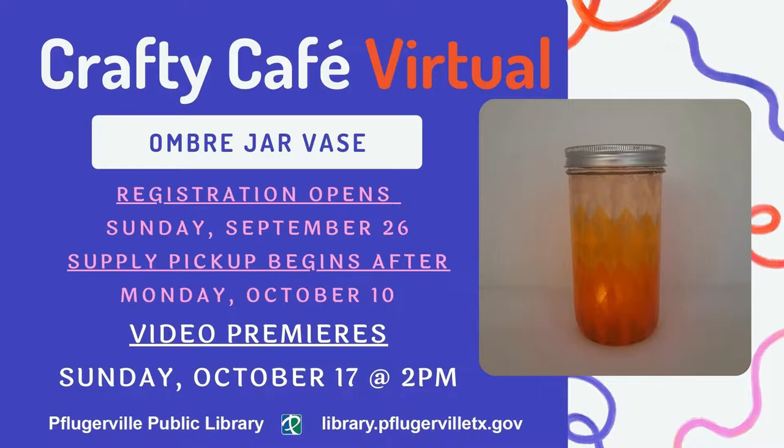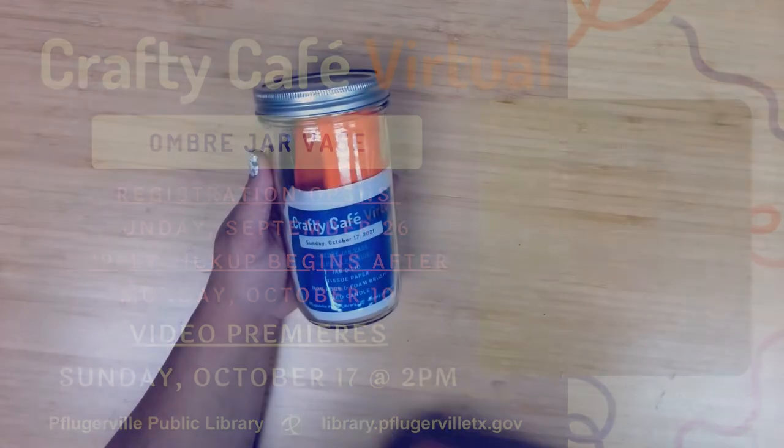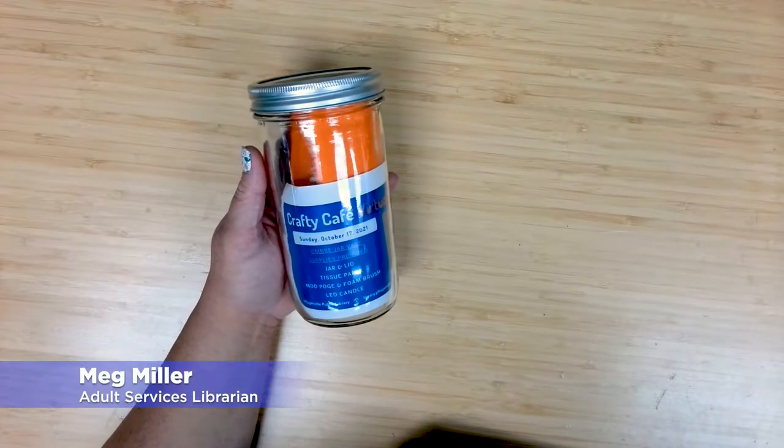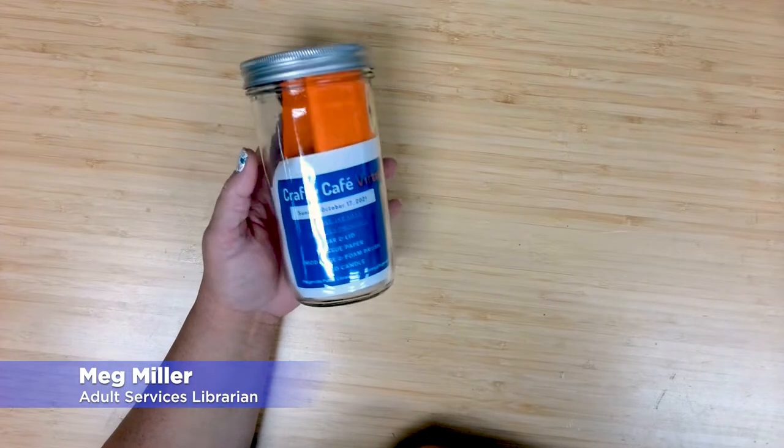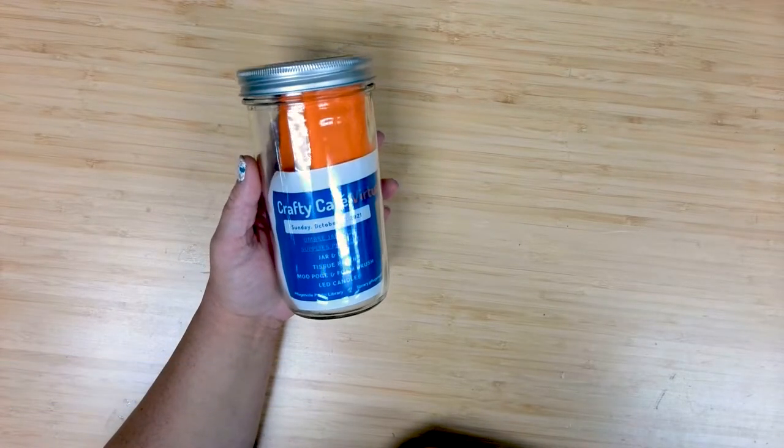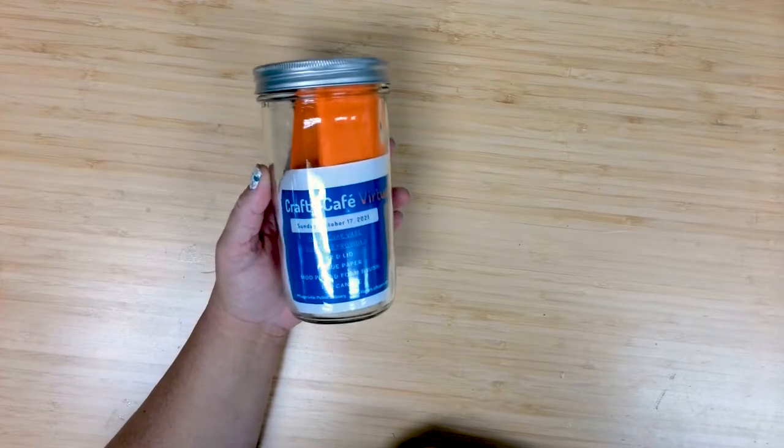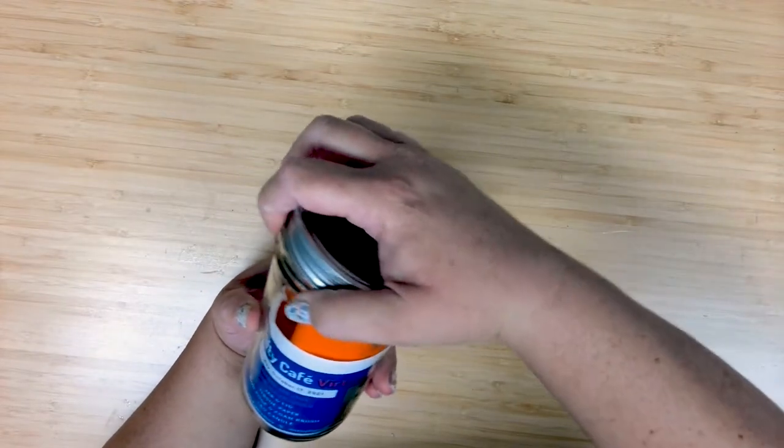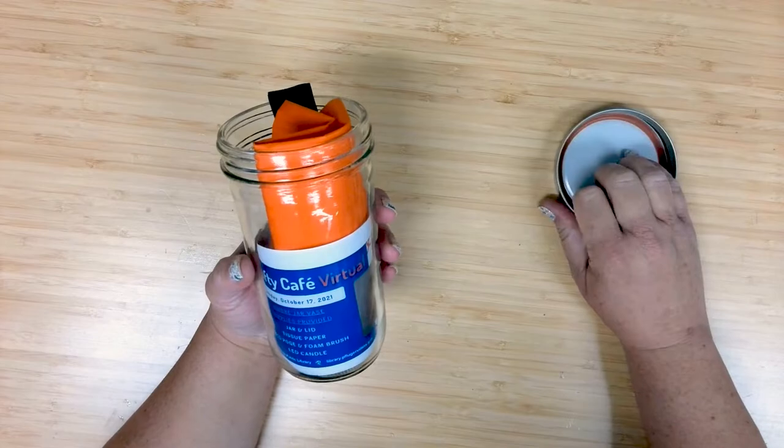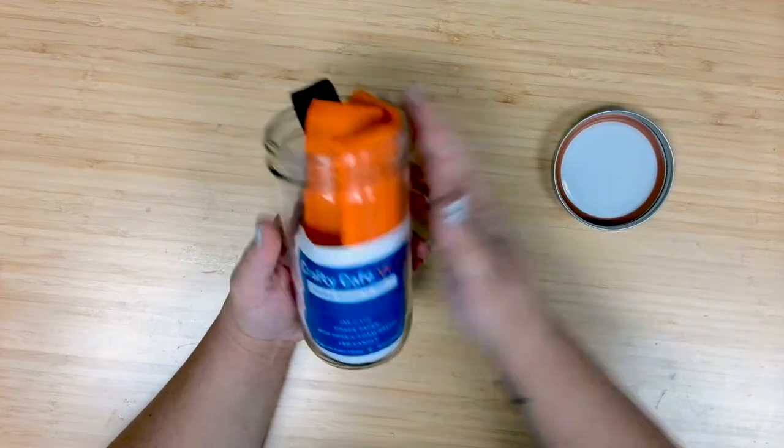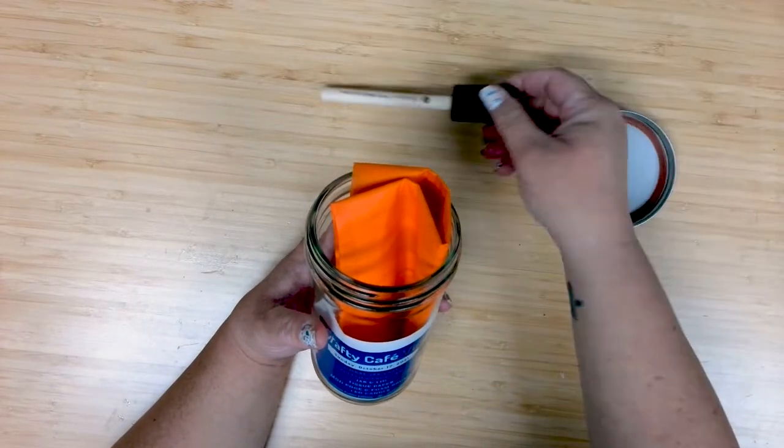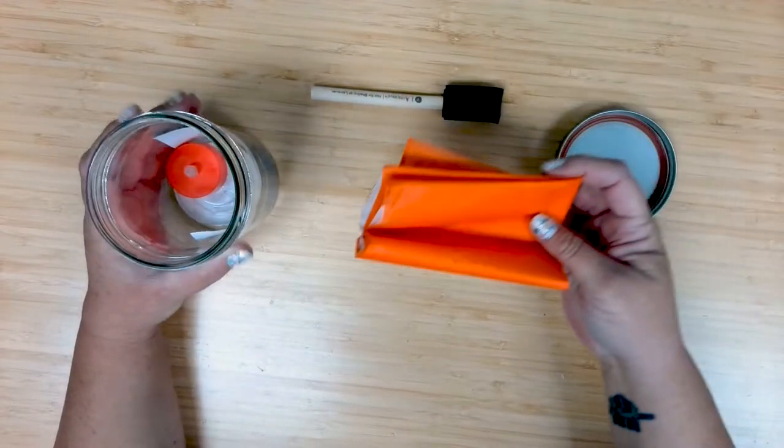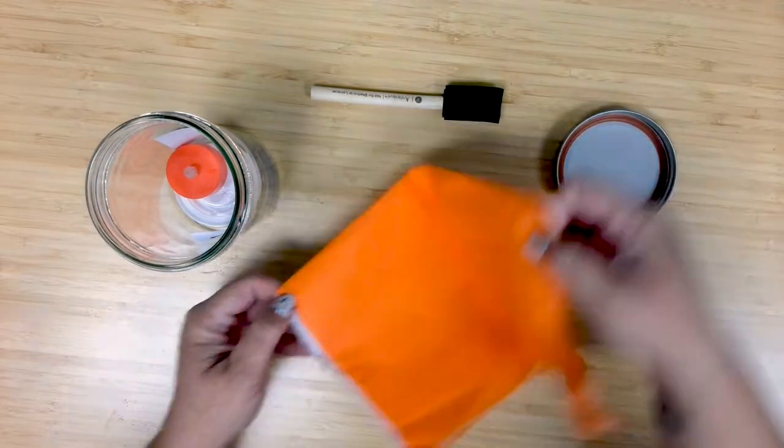So let's get started with this month's craft, an ombre jar vase. For this month's Crafty Cafe, all of our supplies handily fit right inside the mason jar that we'll be using to make our jar vases. So if you were one of the folks who signed up and came to pick up supplies, inside your jar you have the foam brush.